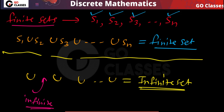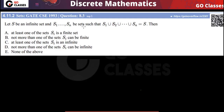So if S1 union S2 union ... union Sn equals S, where S is infinite, what can you say about S1 through Sn? At least one of them must be infinite. This is the correct statement.